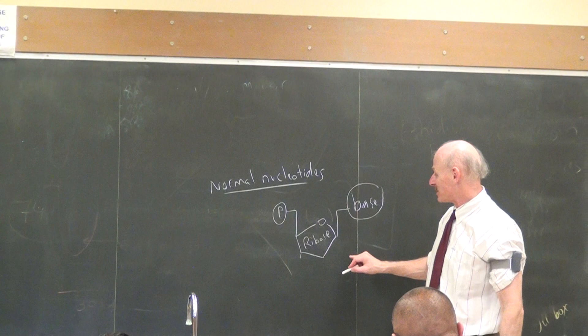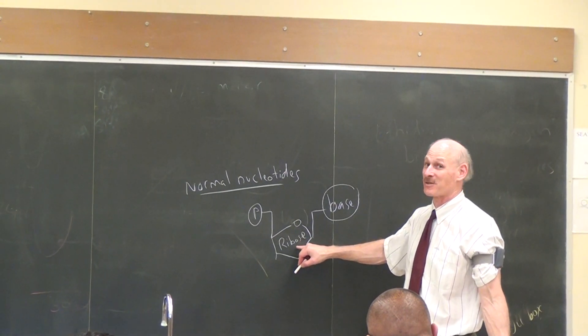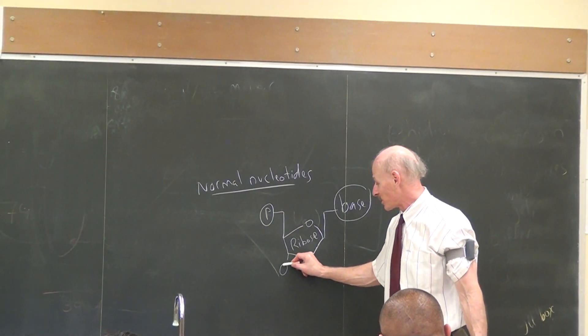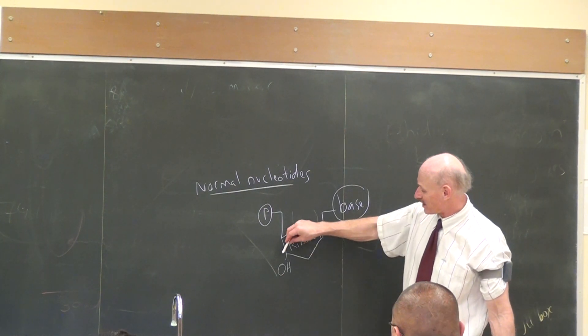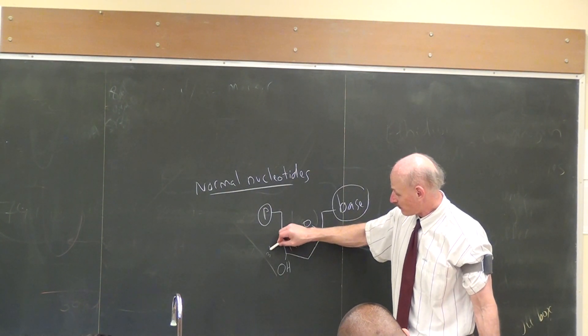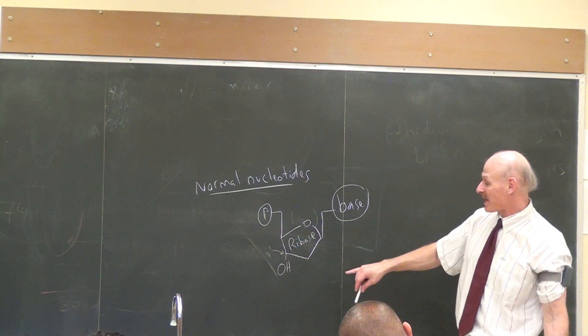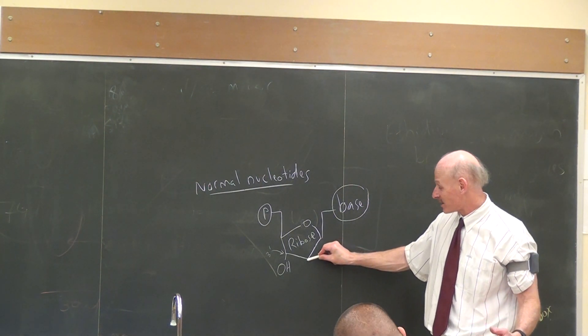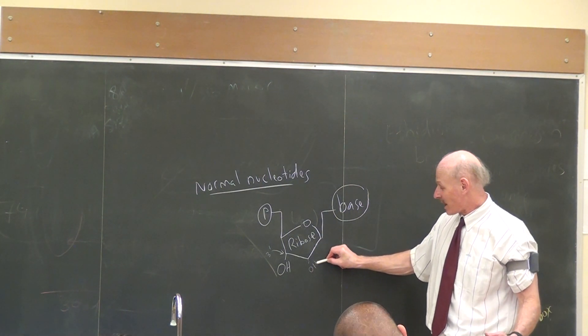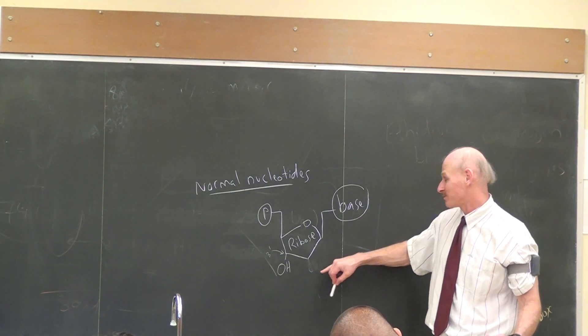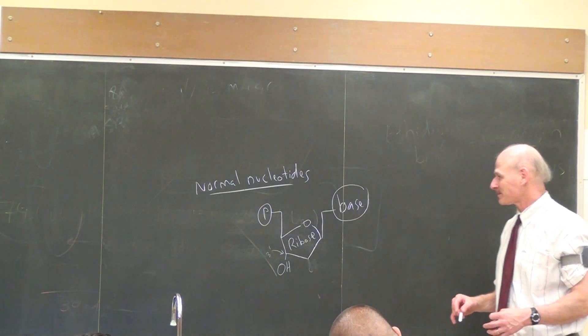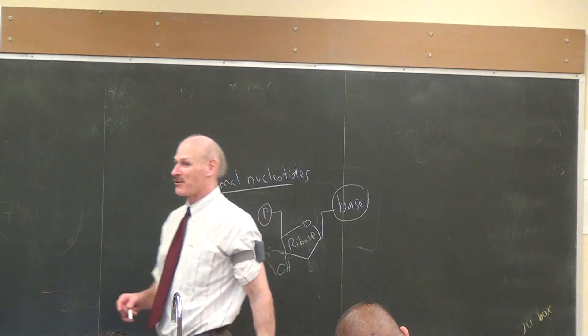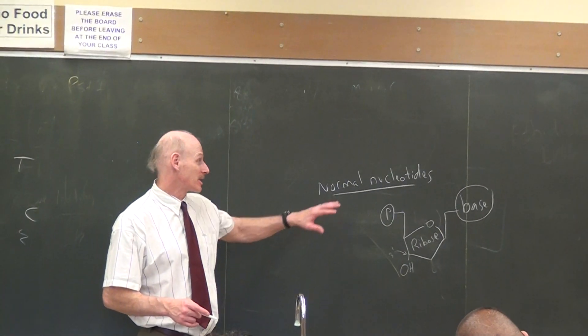And normal nucleotides, if they're deoxyribonucleic acids, if they're DNA, they don't have a hydroxyl group there. But normal nucleotides do have a hydroxyl group there. That's called the three prime carbon. So both DNA and RNA do have the hydroxyl group there. Again, just to reiterate, RNA nucleotides have an OH there, but DNA nucleotides don't. That makes them deoxyribonucleic acid.